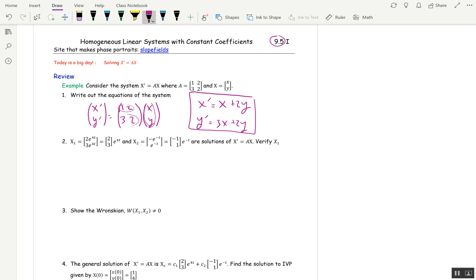In the second part, I state that X₁ and X₂ are solutions of X' = AX. We're going to verify X₁ as a solution. Note that I've written both X₁ and X₂ in two different forms, one with e^(4t) distributed and one with it factored out. When you're going to actually do things to these vectors, I think the first form is better.